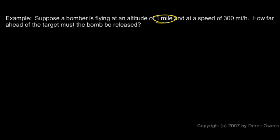In this example we're told that a bomber is flying at an altitude of one mile and a speed of 300 miles per hour. And this might be typical of a World War II bomber. There were different types of planes that flew at various speeds and all different sorts of altitudes for different bombing runs. But this might be typical for a World War II bomber on a bombing run.